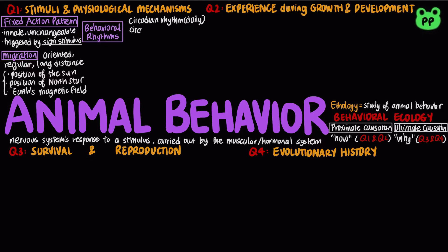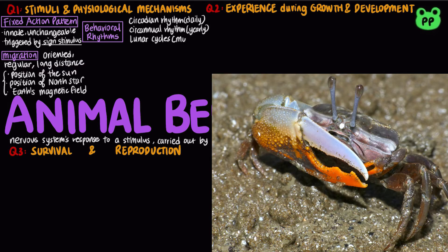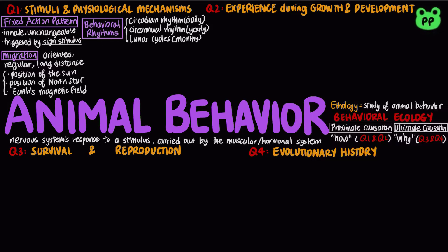Behaviors such as migration and reproduction are linked to changing seasons, or a circannual rhythm. Some behaviors are linked to lunar cycles. For example, courtship in fiddler crabs occurs during the new and full moon.